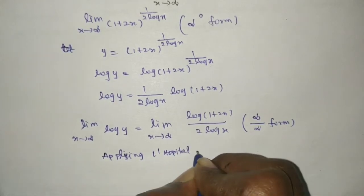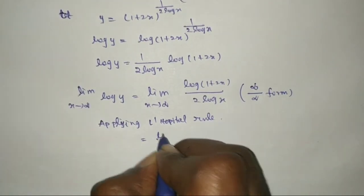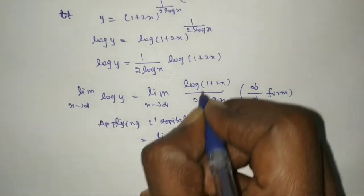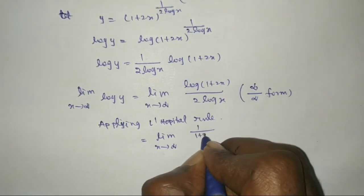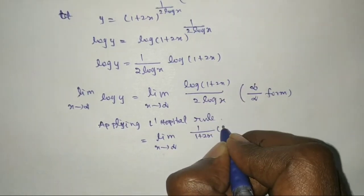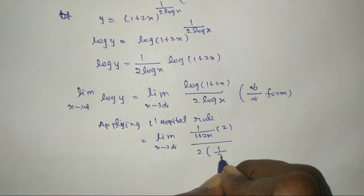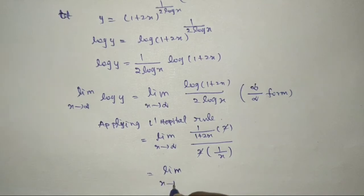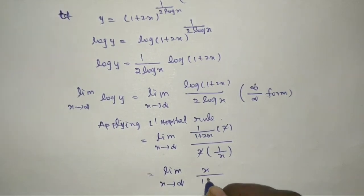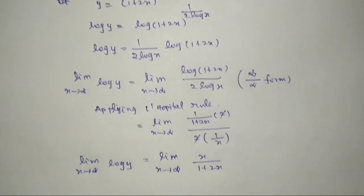Apply L'Hôpital's rule. Differentiate the numerator and denominator separately. The numerator log(1 + 2x) differentiates to 1/(1 + 2x) times 2. The denominator 2 log x differentiates to 2 times 1/x, which is 2/x. The 2's cancel, and x is the reciprocal, giving us the limit as x tends to infinity of x/(1 + 2x).